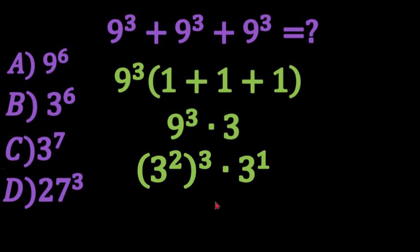Now what we can go ahead and do is when we have an exponent to an exponent we can multiply those. So we would have 3 to the power of 6 times 3 to the power of 1.